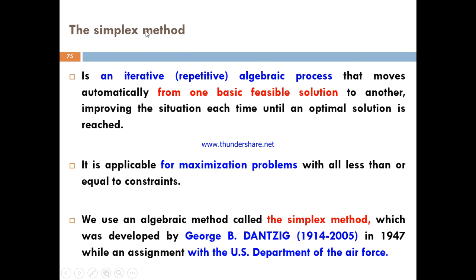The last topic in chapter two is the simplex algorithm, another method to find the solution set. It is an iterative or continuous algebraic process where one can move automatically from one feasible solution to another, improving each situation until an optimal solution is reached. This simple mathematical model was formulated by the US Department of Air Force in the year 1949.